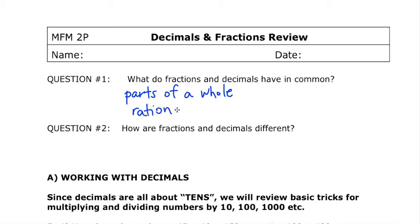When we looked at integers, we looked at them as whole numbers that could be positive or negative values and also included zero. Rational numbers are numbers that can be whole numbers as well, but they also include everything in between those whole numbers. So fractions and decimals are parts of a whole and they're part of rational numbers.